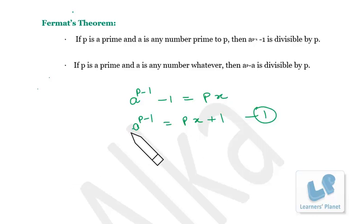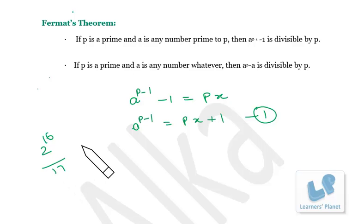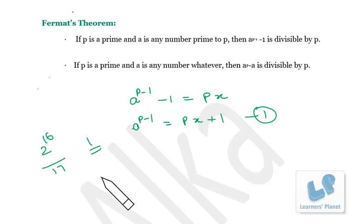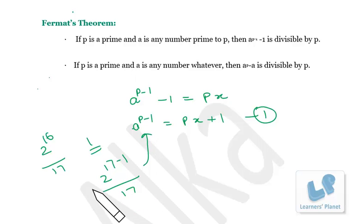A simple example: A can be any number. Suppose you have 2 raised to 16 — that is 2 raised to (17 minus 1). If you divide by 17, the remainder will be 1. Since 17 is a prime number, 2 raised to 16 divided by 17 gives remainder 1.